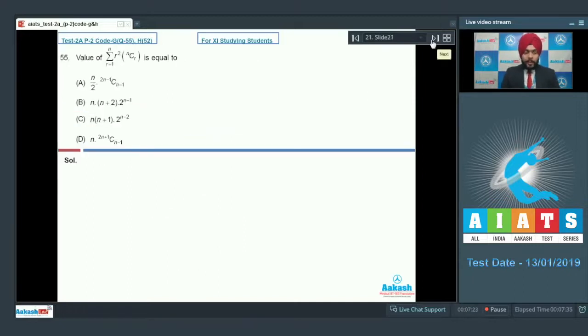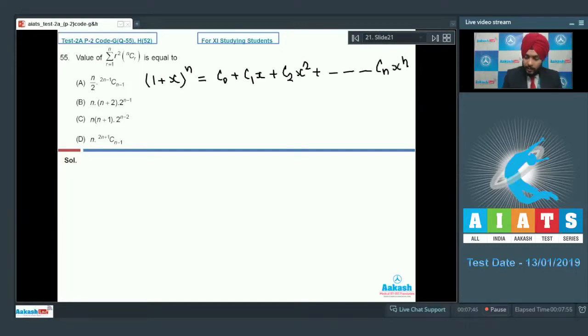Let us move on to question number 55. Question number 55 says that what is the value of sigma r from 1 to n, r squared into nCr. Students, we know that this question has to start from 1 plus x raised to the power n, the expansion of the binomial expansion: C0 plus C1 x plus C2 x square plus until Cn x power n, where C0, C1, C2 are nC0, nC1, nC2 respectively.